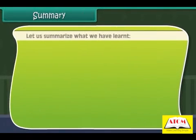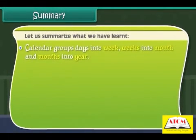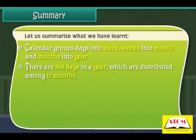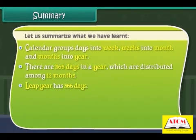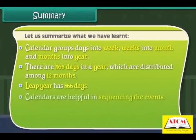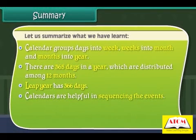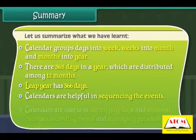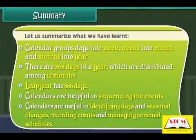A calendar groups days into weeks, weeks into months, and months into a year. There are 365 days in a year distributed among 12 months. A leap year has 366 days. Calendars are helpful in sequencing events, identifying days and seasonal changes, recording events, and managing personal schedules.